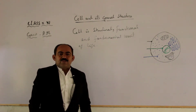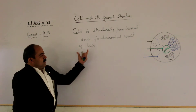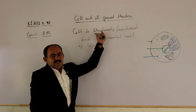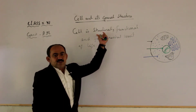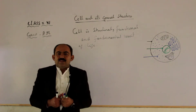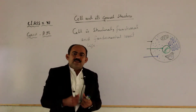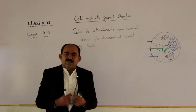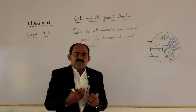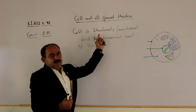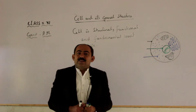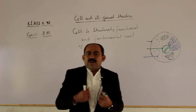Why do we say the cell is a structural unit of life? Because all kinds of animals and all kinds of organisms are basically composed of cells. Their structure is made up of cells, so we can say it is a structural unit of life. Similarly, the cell is also the functional unit of life.